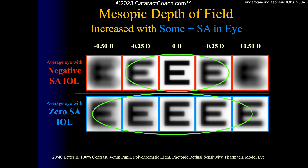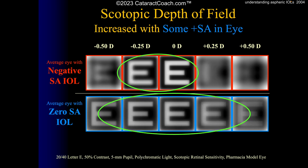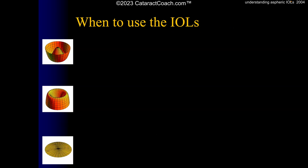There's also a difference in mesopic versus scotopic versus photopic conditions. With a negative spherical aberration lens compared to zero, there's a small difference in the range of useful focus under both mesopic and scotopic conditions.